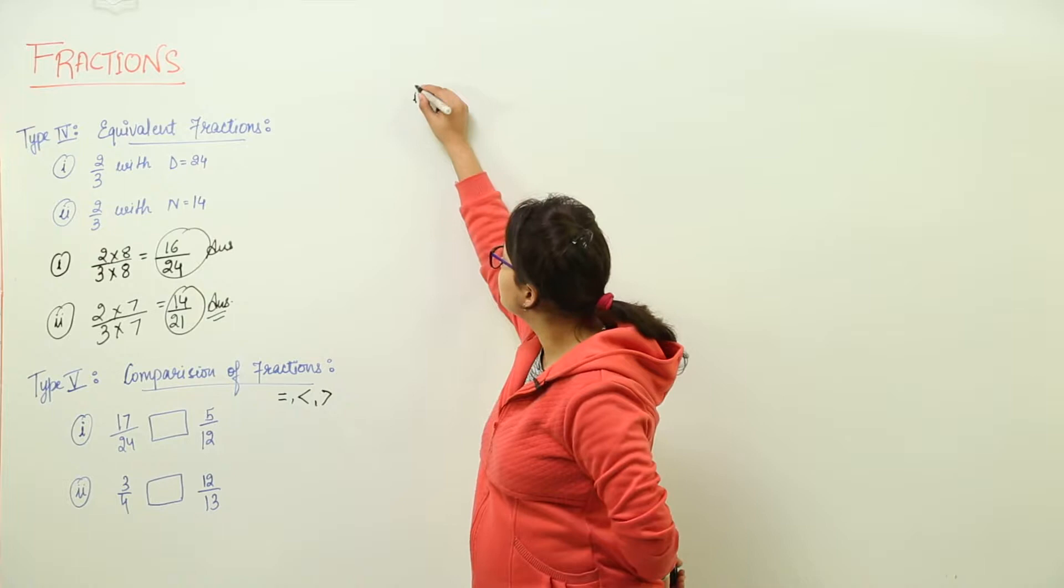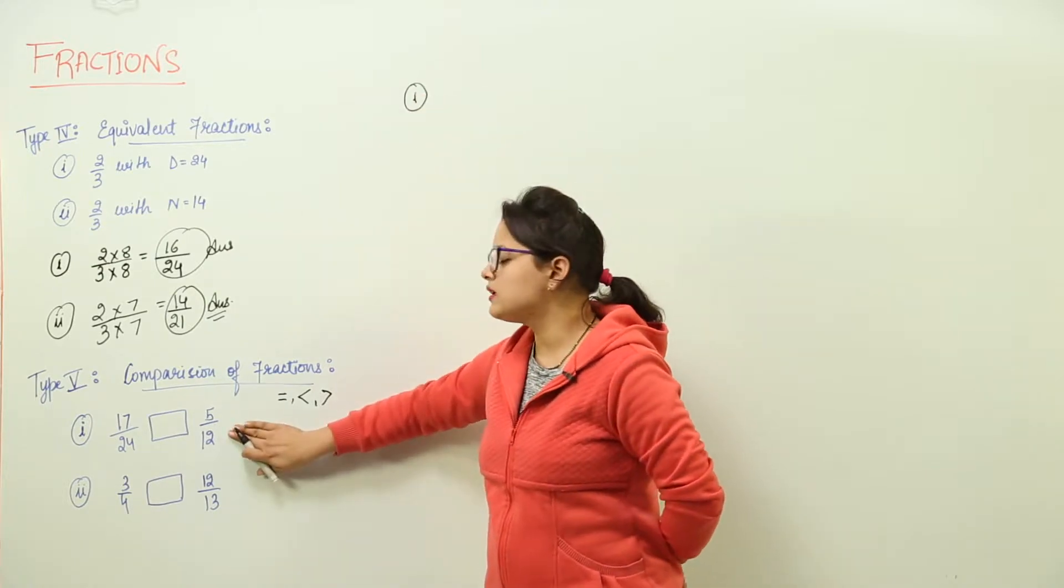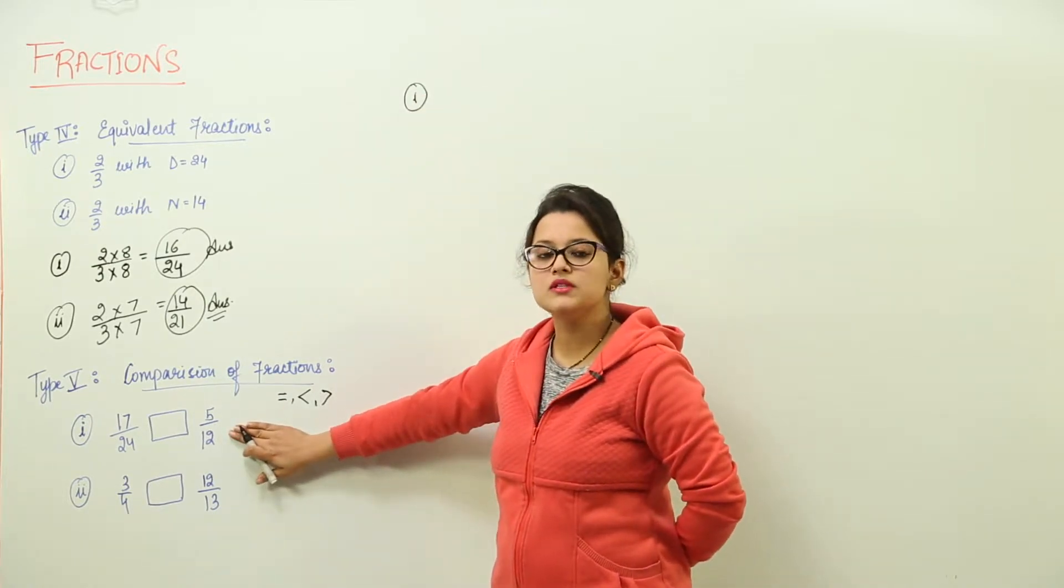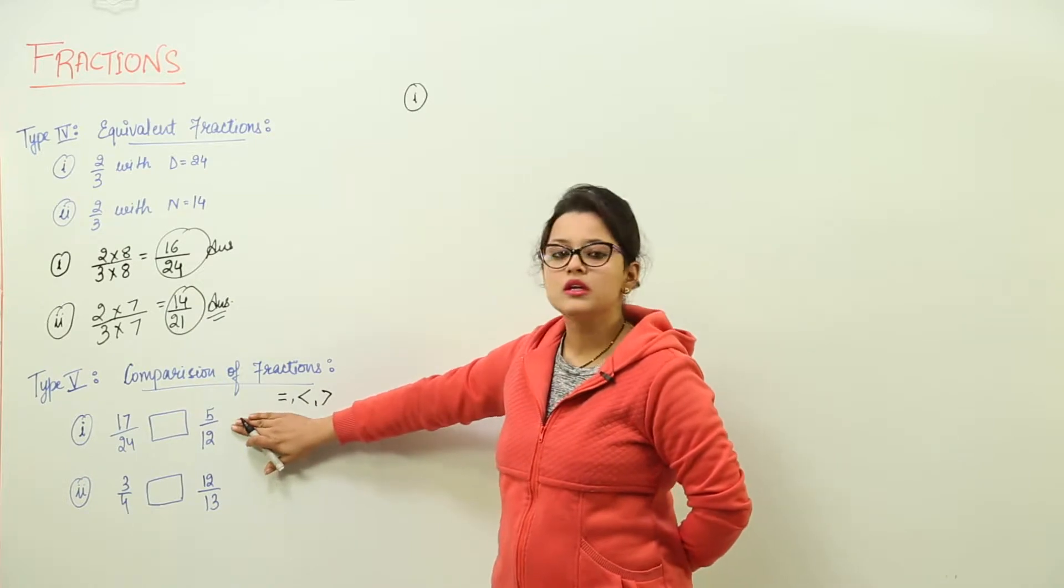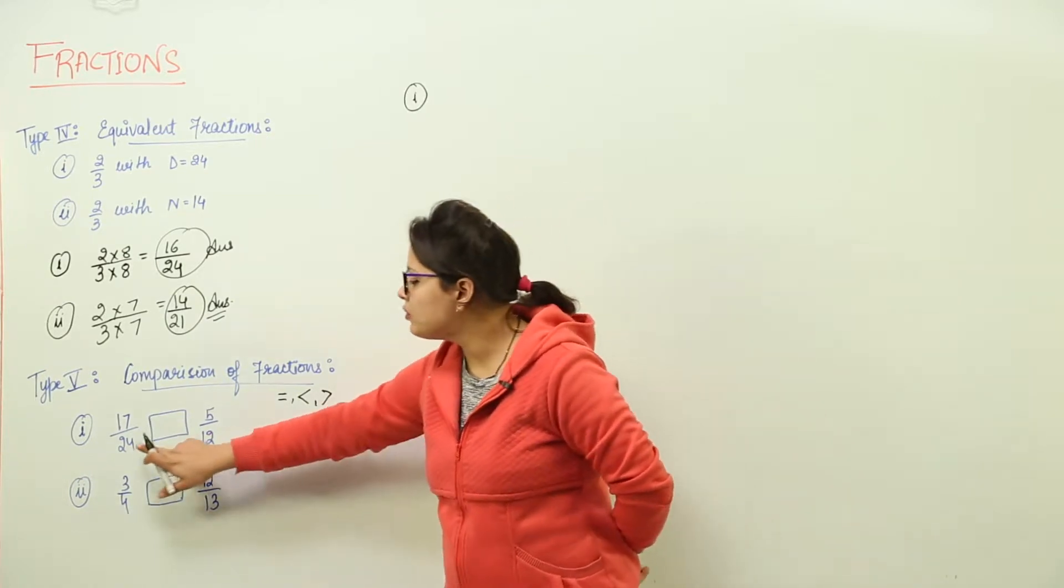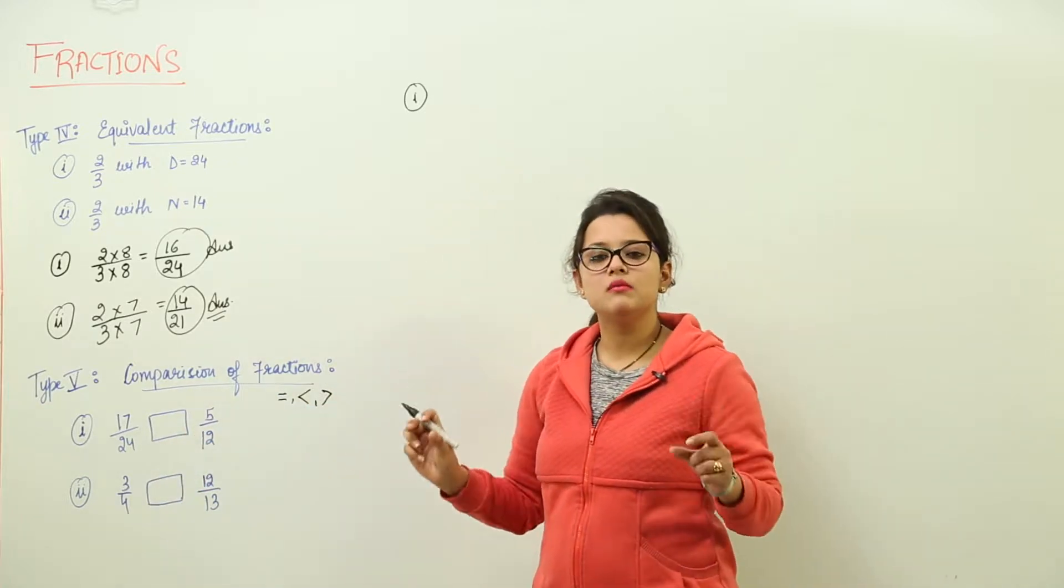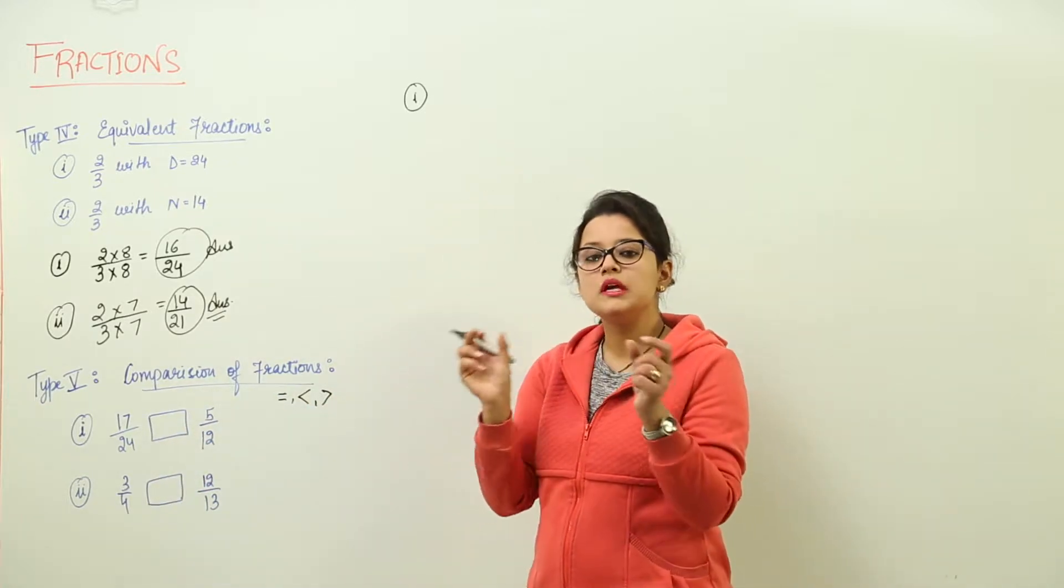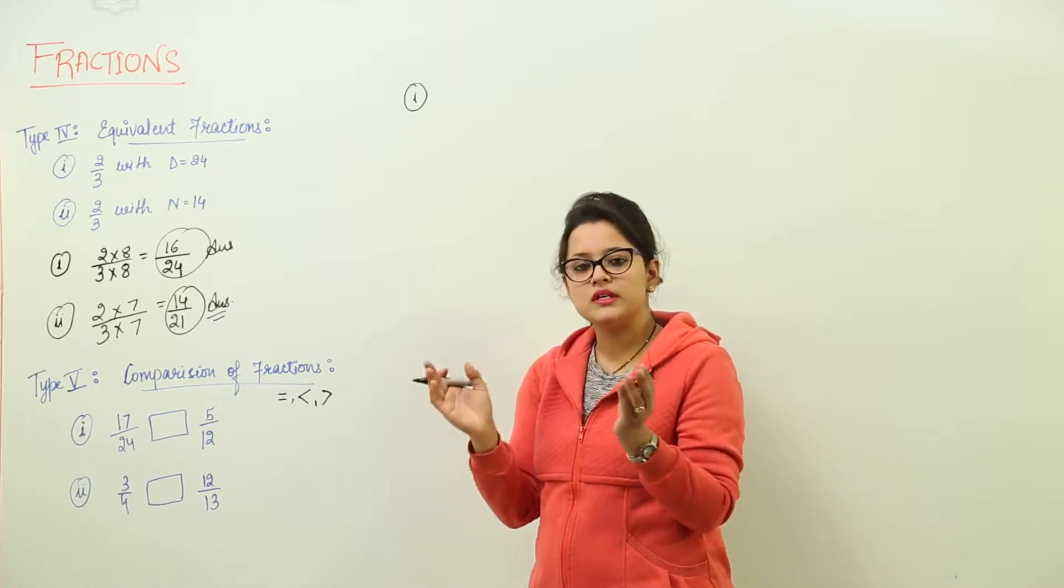We have to convert both the fractions in a similar manner. That means we have to convert them into an equivalent fraction where we should have both the denominators as the same. And then we will be able to do the analysis of the numerators.